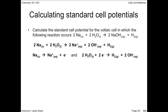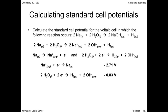Convert the oxidation half reaction for sodium to a reduction half reaction, then use your data book to locate the appropriate reduction potentials for each half reaction. While the coefficients of the sodium half reaction are now different to how they're shown in the net ionic equation, it doesn't make a difference to the reduction potentials.